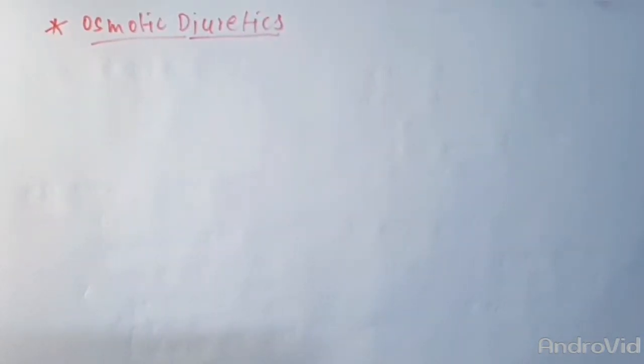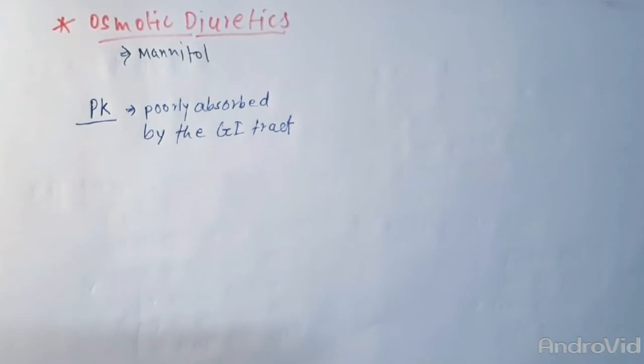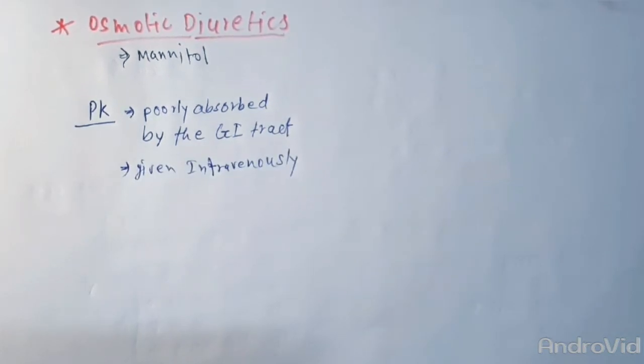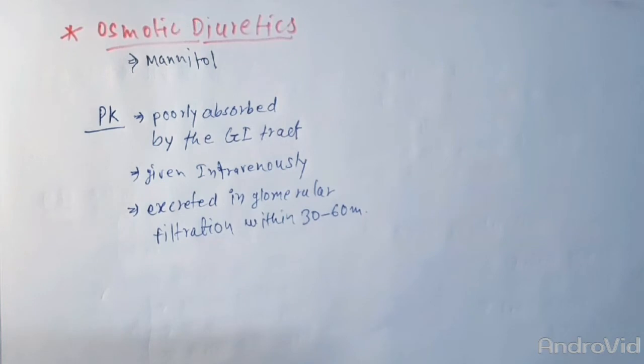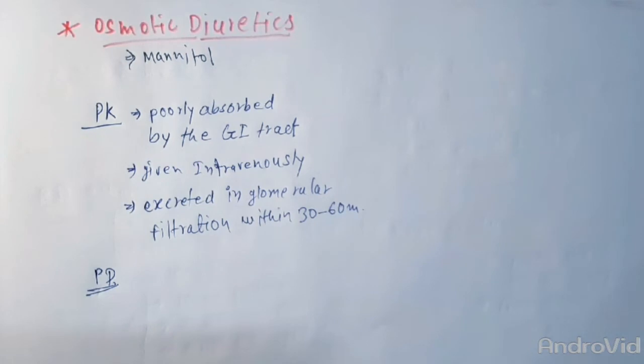Now let's talk about the agents that alter water excretion, the osmotic diuretics. The prototype osmotic diuretic is mannitol. Talking about their pharmacokinetics, mannitol is poorly absorbed by the GI tract, and when administered orally it causes osmotic diarrhea rather than diuresis. For systemic effect, mannitol must be given intravenously.